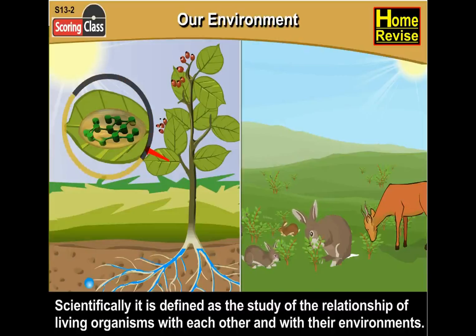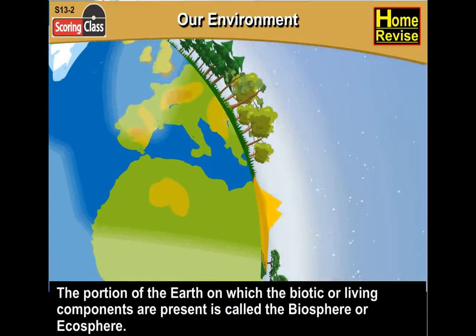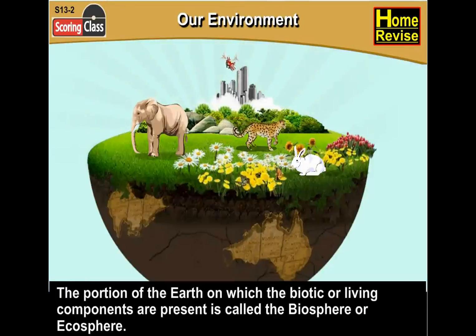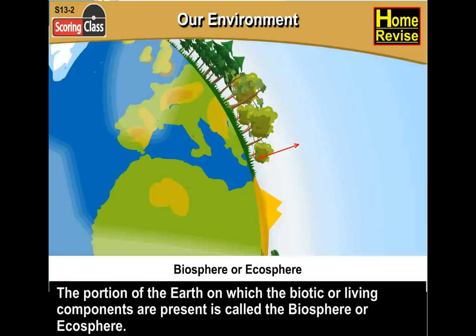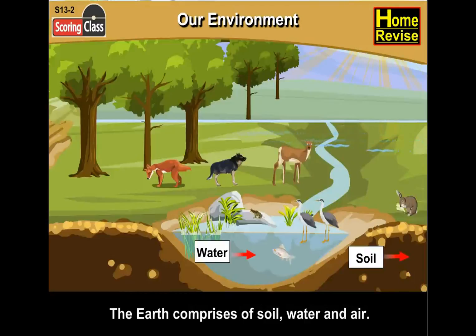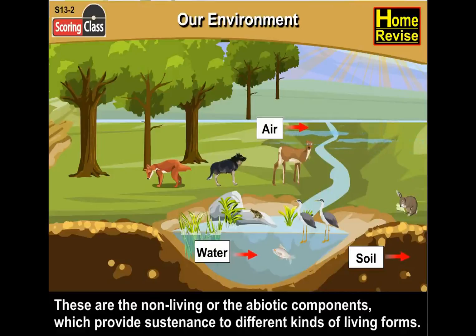The portion of the earth on which the biotic or living components are present is called the biosphere or ecosphere. The earth comprises of soil, water and air. These are the non-living or the abiotic components which provide sustenance to different kinds of living forms.